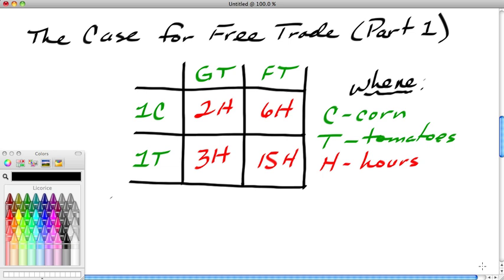To simplify our analysis, we're going to assume that there are only two producers and two products. Let's assume that these two producers are gardeners, Green Thumb and Five Thumbs. Each of these gardeners can grow tomatoes and corn.